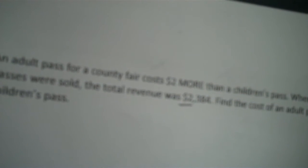An adult pass for a county fair costs $2 more than a children's pass. When 378 adult and 214 children's passes were sold, the total revenue is $2,384. Find the cost of an adult pass and the cost of a children's pass. So three units, adults, children, and money. You can see them highlighted right there. So together, how many units, per unit, and total.